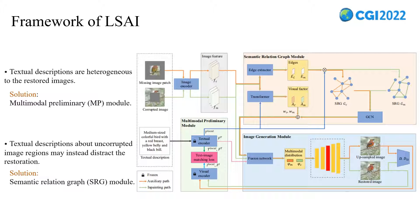Facing these challenges, we propose our LSAI model. LSAI consists of three components: the multimodal preliminary module, semantic relation graph module, and image generation module. To address the heterogeneity between visual and textual modalities, we designed a text-image measuring loss in the multimodal preliminary module to regularize the similarities between the generated images and textual descriptions, measuring the multi-modal similarities locally and globally, which avoids the partial cross-domain problem. To address the distracting words, the semantic relation graph module is proposed to extract meaningful textual words, which utilizes a graph convolution network to aggregate the node-neighborhood information from the underlying images and update word embeddings.